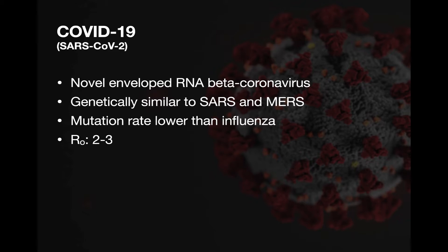The R0 for this particular virus is 2 to 3, meaning basically 2 to 3 people will become infected for every one person that's infected — so if you get it, you'll infect 2 to 3 people while you have it. This is significant enough for human-to-human transmission to cause a pandemic, and the R0 here is similar to that of influenza, giving us an idea of the characteristics of this disease.